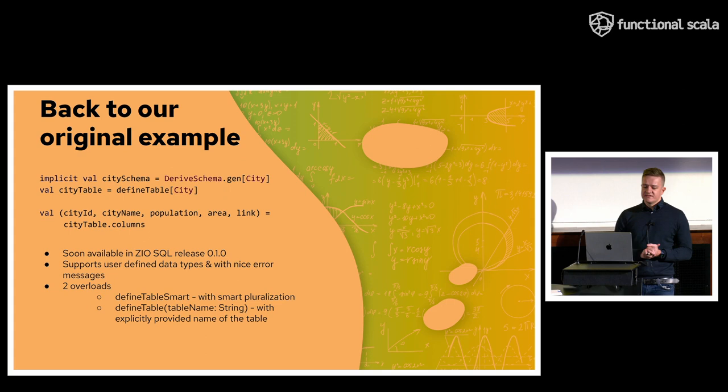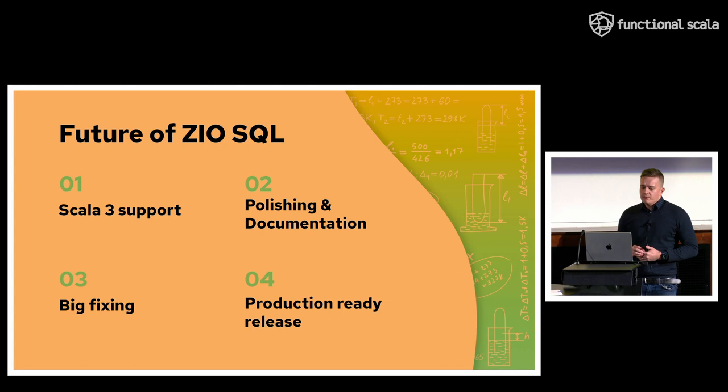So let's sum up. So back to our original example. Now I think that this is less boilerplate-y and it's more natural. We can define, we can describe table with just type parameter city, which is a case class. So this will be available in Zio SQL release 010. Apologies we didn't make the release till this talk, but it's going to be out in a couple of hours. And there are two overloads of define table methods. So define table smart is doing smart pluralization according to English grammar, as you would expect. Also irregular verbs are pluralized. Or you can explicitly provide the name of the table.